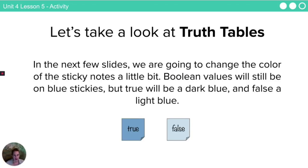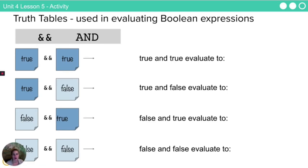So we're going to take a look at something called a truth table. In the next few slides, I'm going to change the color of the stickies just a bit. So these are going to be your blue stickies. True is going to be a dark blue and false is going to be a light blue. I'm going to show you something called a truth table, which you can think of as kind of a graphic organizer for how to think about these and, or, and not statements.